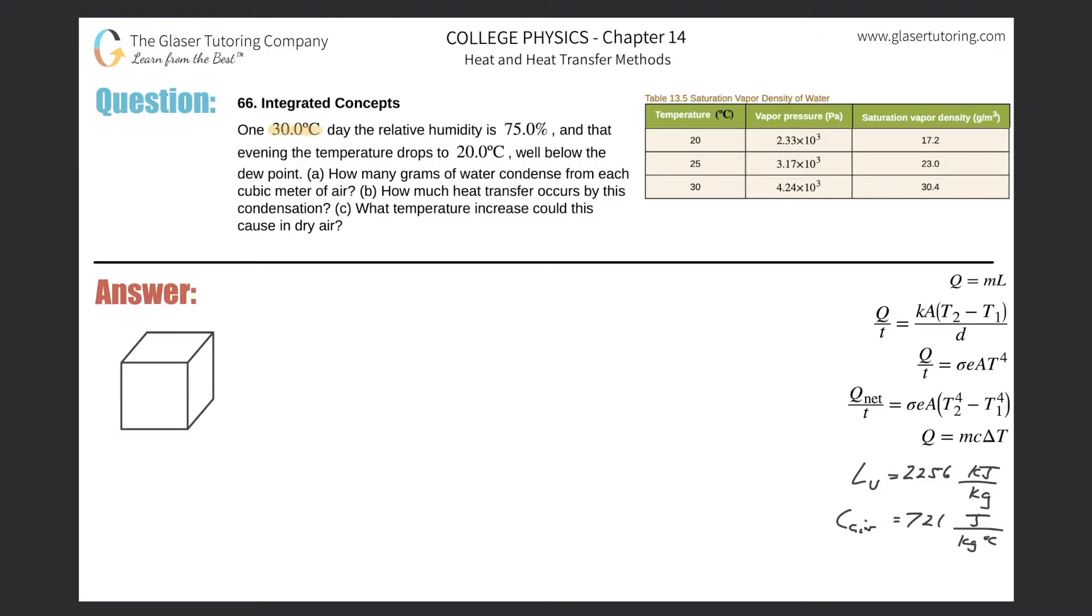Number 66. A 30 degrees Celsius day, the relative humidity is 75%, and that evening the temperature drops to 20 degrees Celsius, well below the dew point. Letter A: How many grams of water condense from each cubic meter of air?